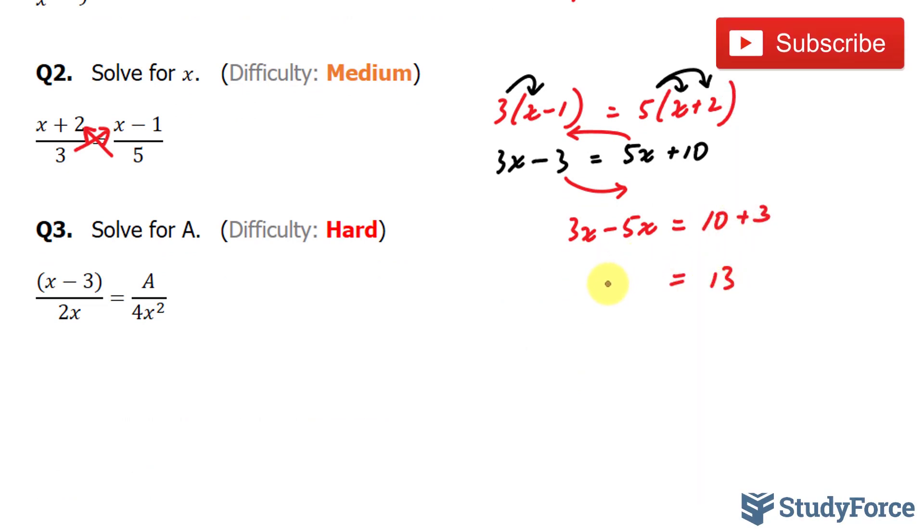And on the left side, we have negative 2x. Therefore, x is equal to 13 over negative 2. Or what we commonly like to do is put the negative at the top. And mathematically, they mean the exact same thing.